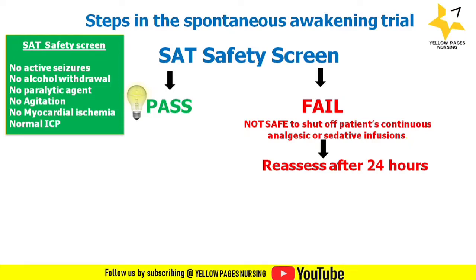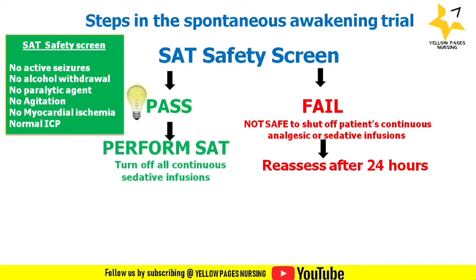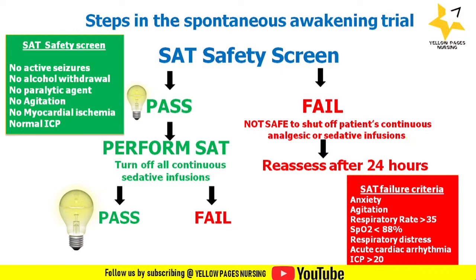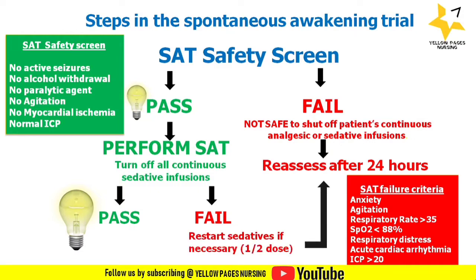The patient who passed the safety screen will go for the awakening trial, which means turning off all continuous sedative infusions. The patient is then observed. If the patient has any one of the SAT failure criteria — such as anxiety, agitation, respiratory rate more than 35, SpO2 less than 88%, respiratory distress, acute cardiac arrhythmia, or ICP more than 20 — the patient fails the awakening trial and sedation is restarted, if necessary at half the dose.